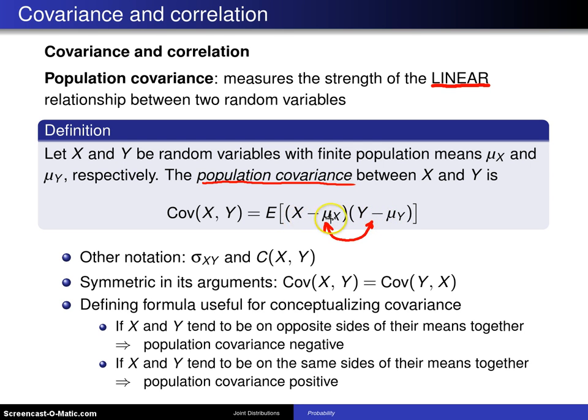Likewise, if X is below its mean while Y is above its mean, again you get a negative times a positive, and that is a population covariance which is negative.